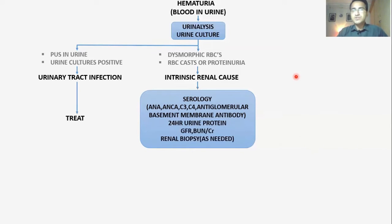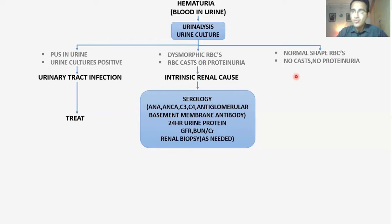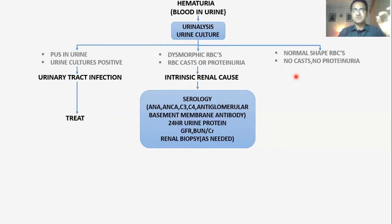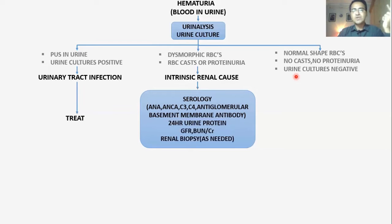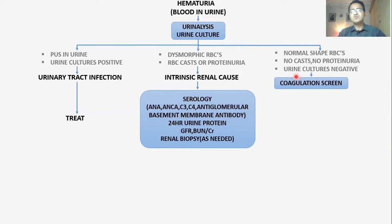In a third case, you find normal-shaped RBCs on urinalysis with no casts and no proteinuria. This means it is not an intrinsic renal cause — there is no damage to the kidneys. If urine cultures are also negative, it means it is not an infection either, so both intrinsic renal cause and urinary infection are excluded.